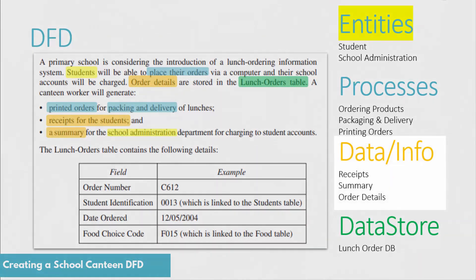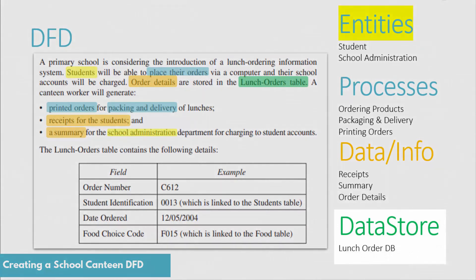The data and information in this system — the data is what goes in and the information is what comes out. The students will need to put in their order details to get the whole thing started, so order details would be data that goes into the system. The things that come out of the system would be the receipt for the students as well as the summary for the school administration. The final thing we need is a data store, which in this case is called the lunch orders database.